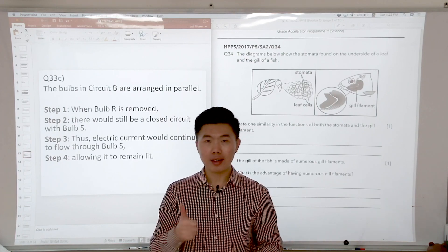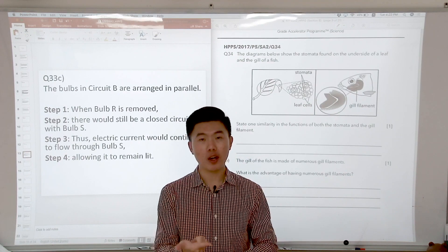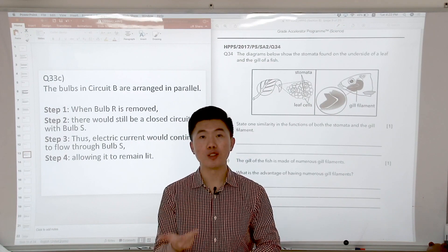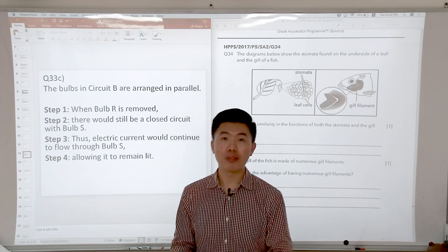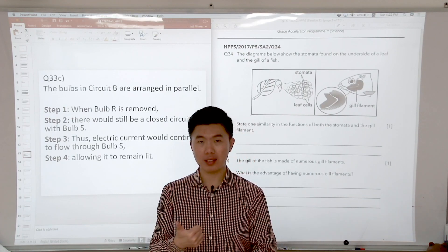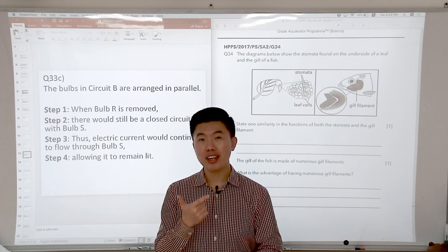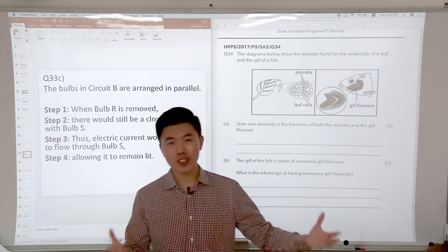So we mentioned three gases. The first one is oxygen. The second one is carbon dioxide. The third one is water vapor. And these three gases are involved in three processes: photosynthesis, respiration, and transpiration. That's for the stomata.